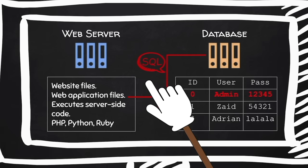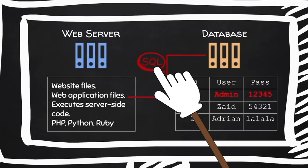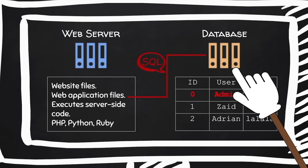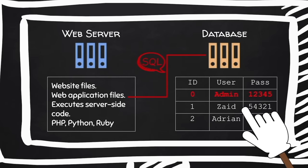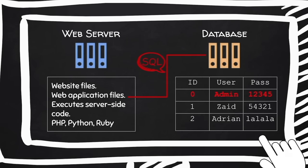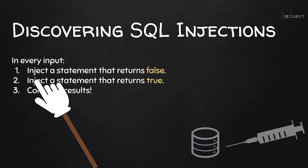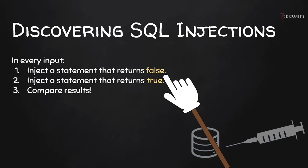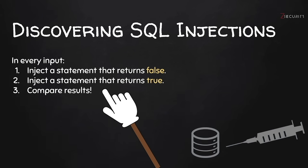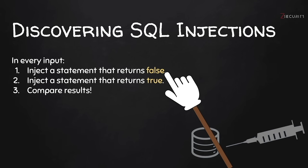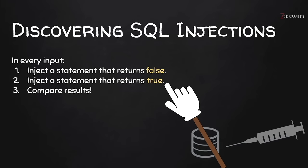Usually when you're able to inject whatever SQL statement you want, you don't even need to log in as admin in many cases, because you already have access to the database. The database usually contains all the information you need — all the users, all their data, and all the data stored on that website. To discover SQL injections, we try to inject a statement that returns false and analyze what happens. If the website breaks, and a true statement does not break it, then the website is executing whatever statements we give it — and therefore it's vulnerable to SQL injections.